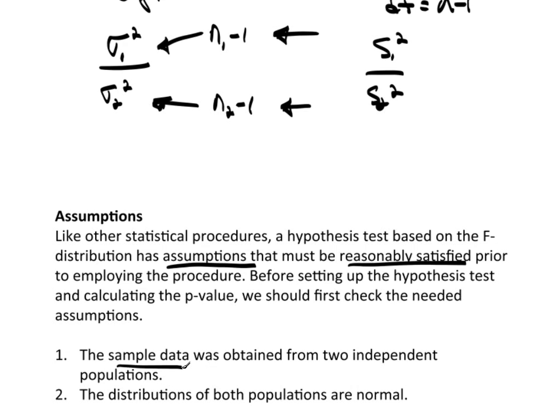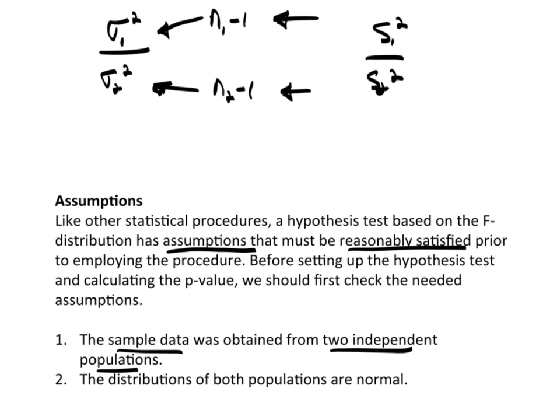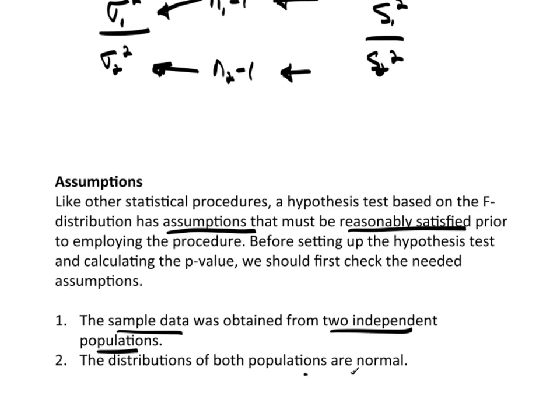The assumptions, there are actually two of them. That the data was sampled or obtained from two independent populations. We need to have independent data. If our data is dependent, this is not the route to take. And the second is that the distributions of both populations are normal.